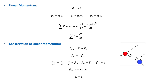The linear momentum P is a vector quantity defined as the mass of the particle times its velocity. This shows that a fast-moving car has more momentum than a slow-moving car of the same mass. Another example is that a bowling ball has more momentum than a basketball if both are moving at the same speed. The SI units of momentum are kilogram times meter per second.